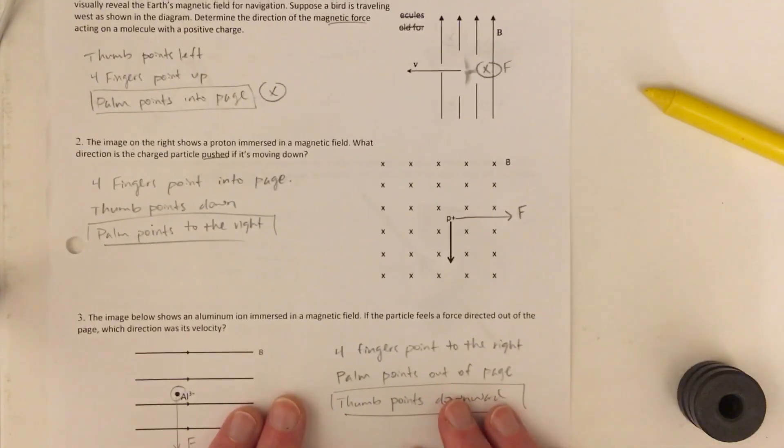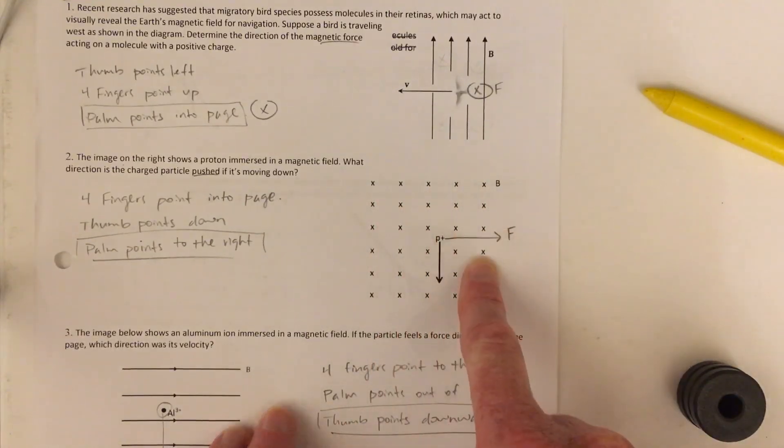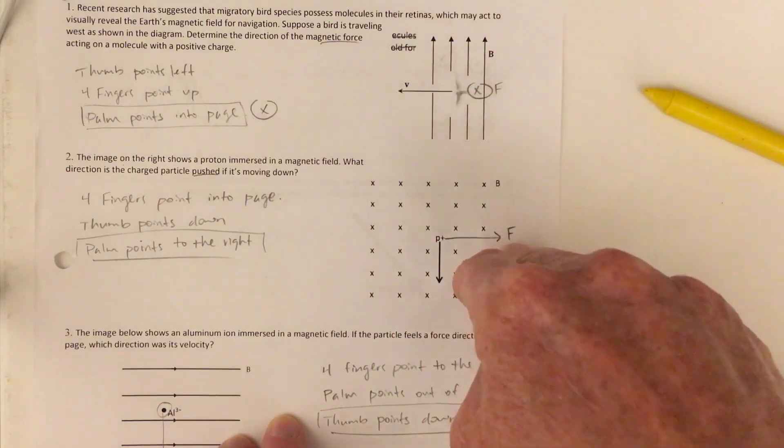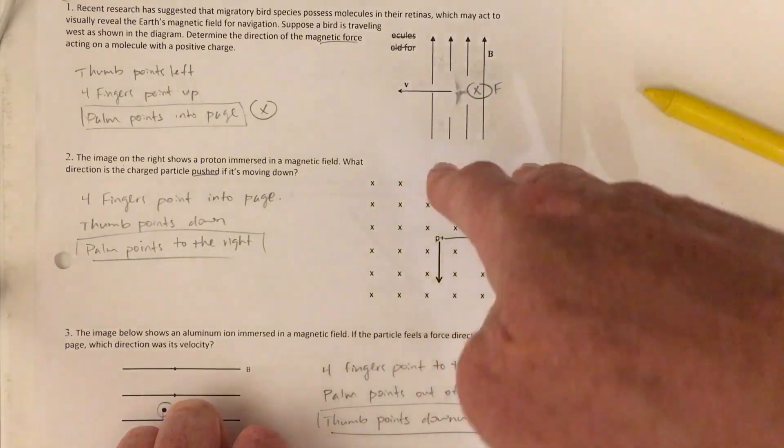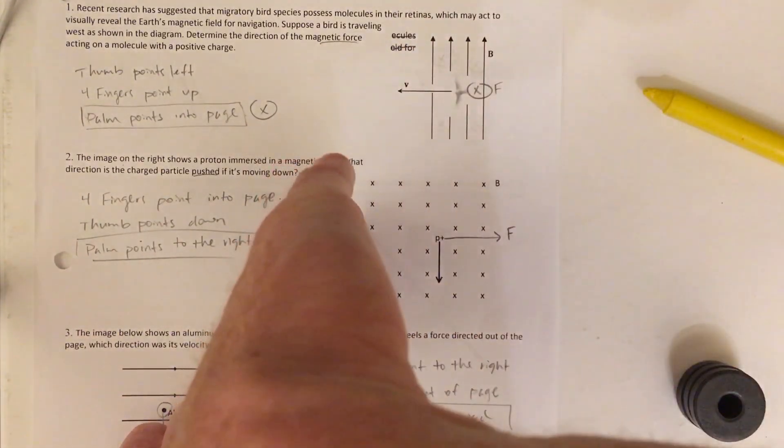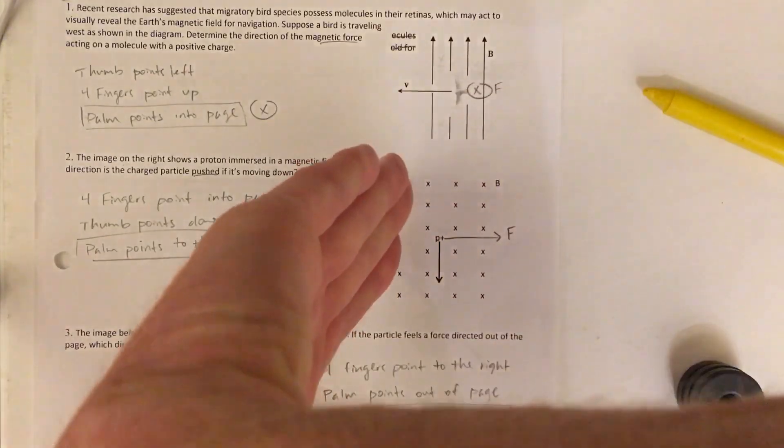Number two, these X's means that there's a magnetic field going into the page this way. So I hold my four fingers into the page. The particle velocity is down, so while my fingers are into the page, I point my thumb down. And that means my slap is to the right. So thumb down, four fingers into the page, palm is slapping to the right.